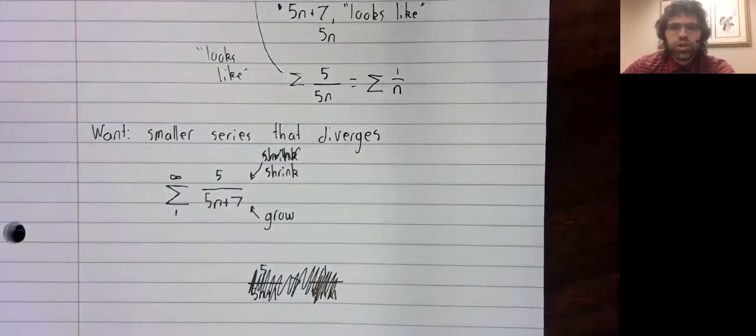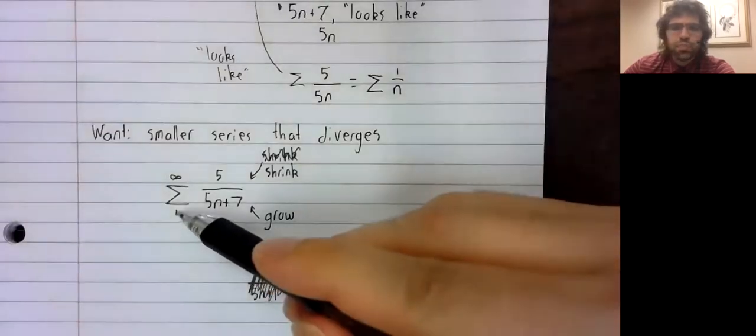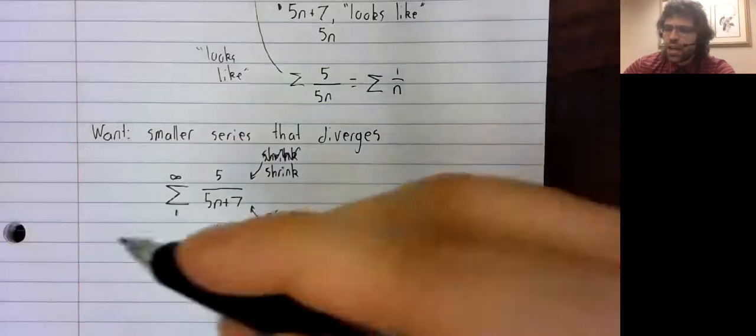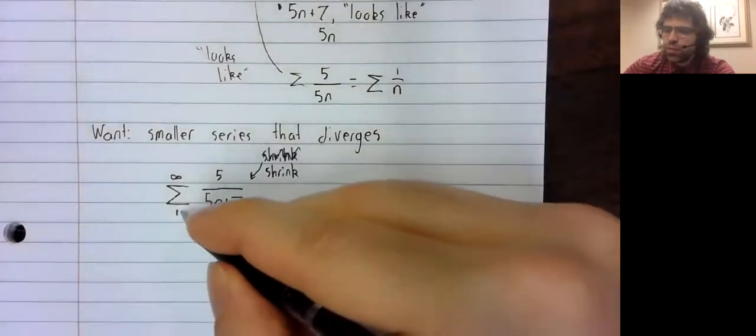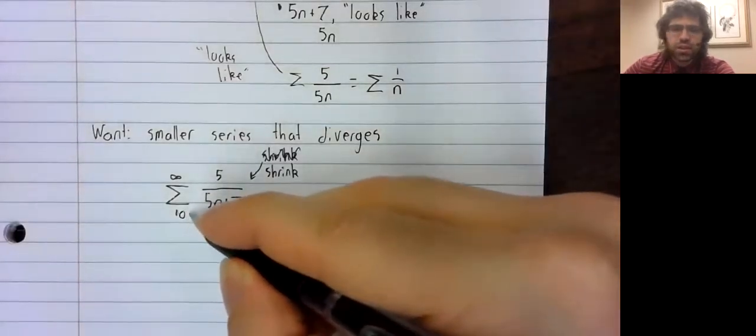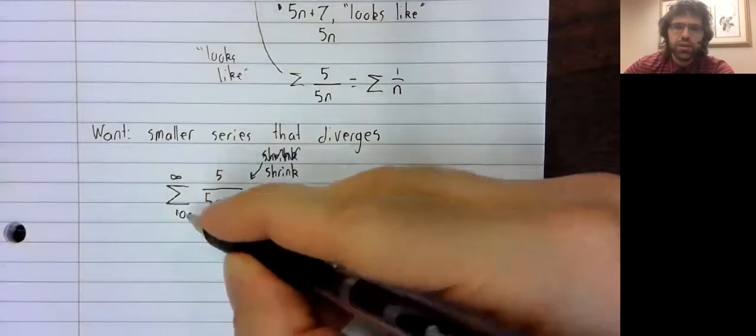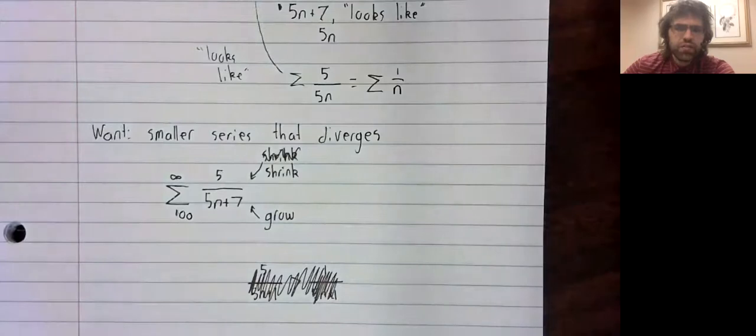The convergence and divergence of a series never depends on where we start. If I have a 1 here, or a 10 here, or a 100 here, it doesn't affect convergence or divergence.